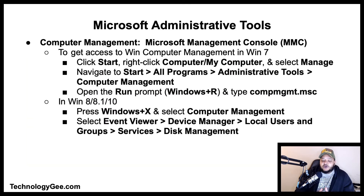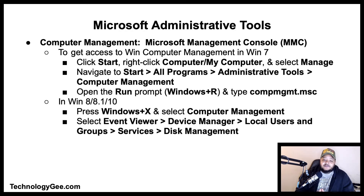To get access to Windows Computer Management in Windows 7, click Start, right-click Computer or My Computer and select Manage. Navigate to Start > All Programs > Admin Tools > Computer Management, or open the Run prompt by pressing Windows key + R and type compmgmt.msc.